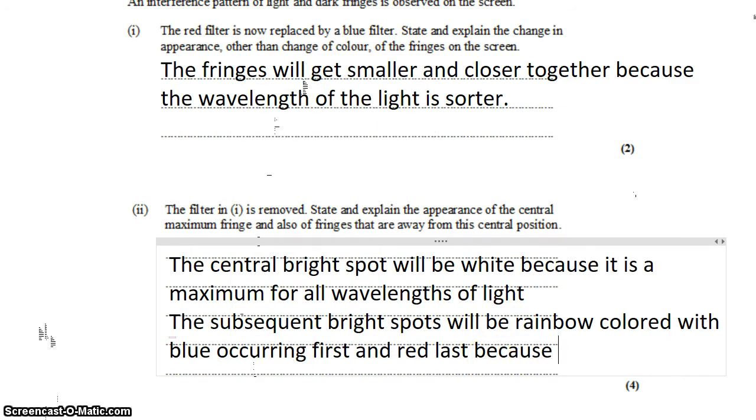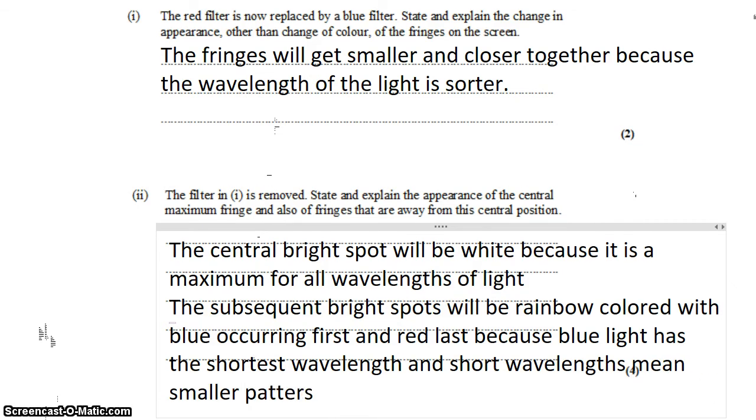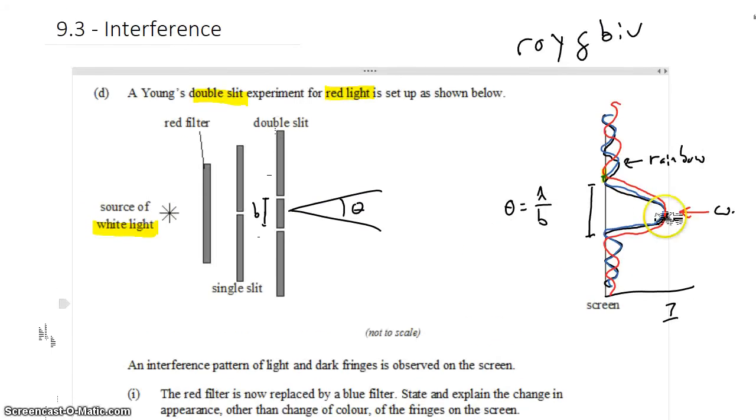Because blue light has a shorter wavelength, and shorter wavelengths mean smaller patterns. So the pattern starts repeating faster for the blue light, and the blue light shows up first.